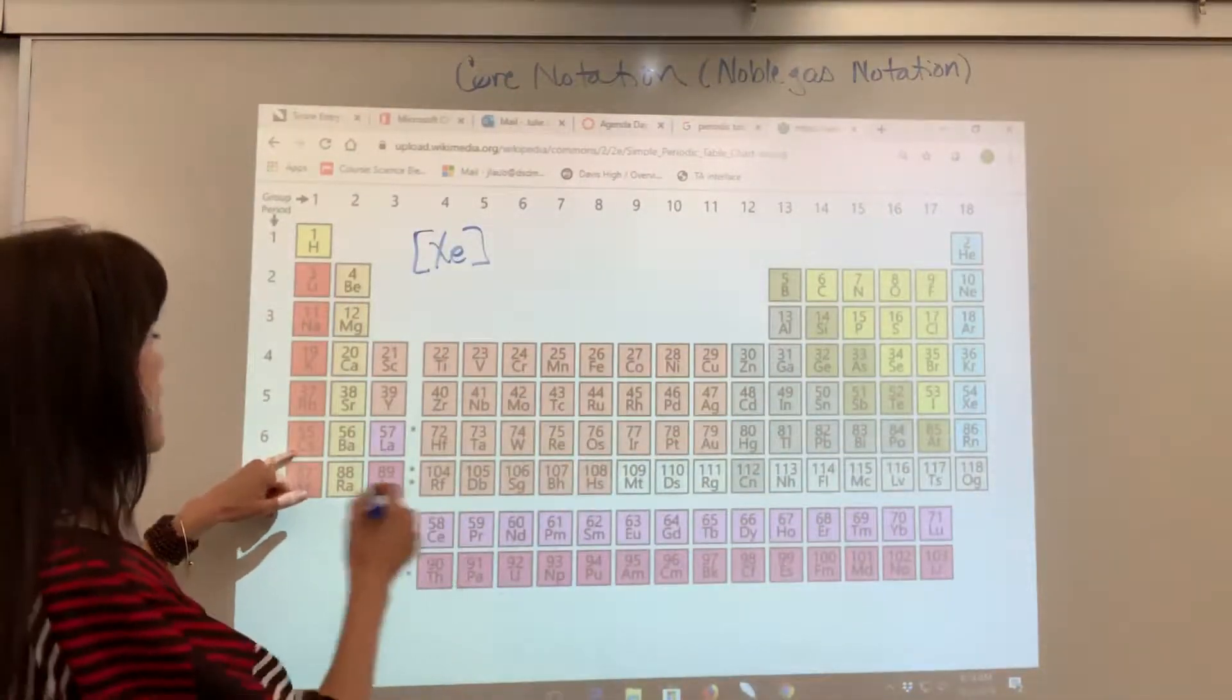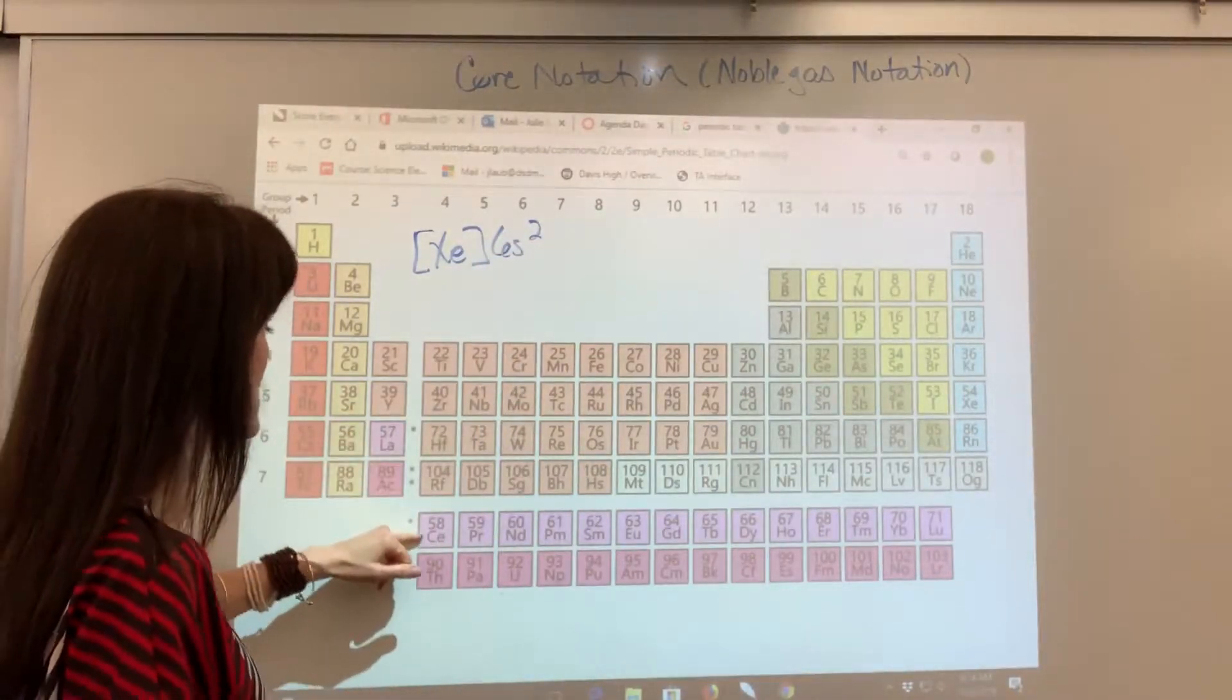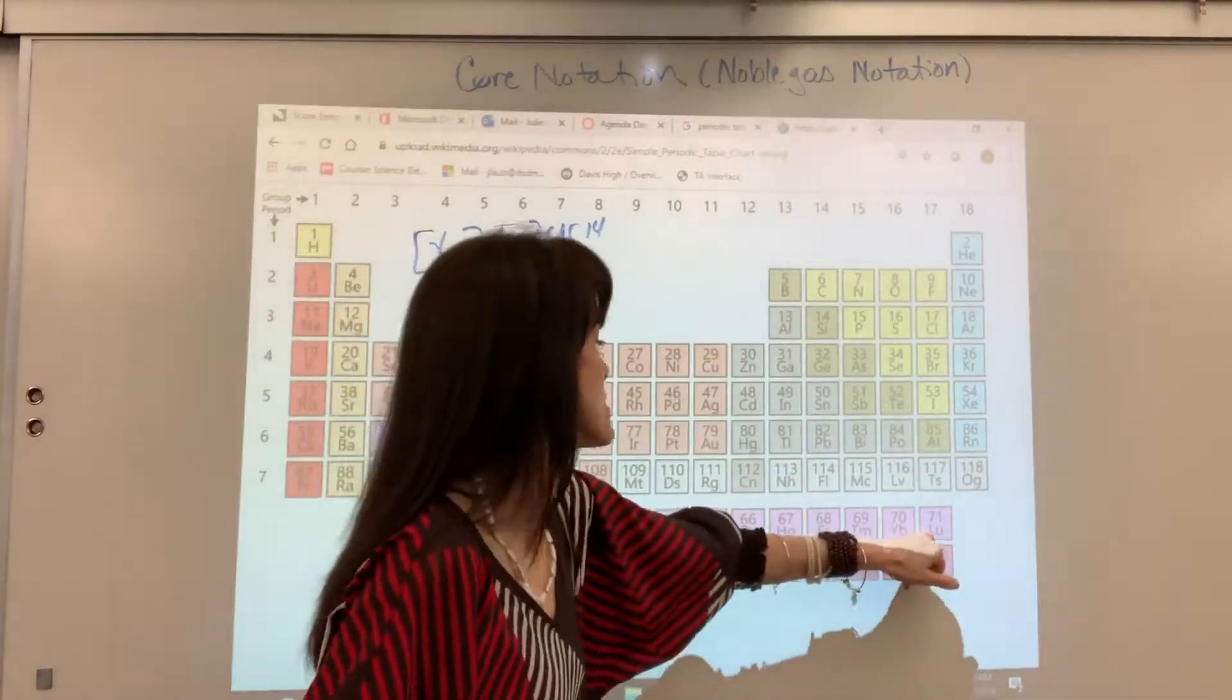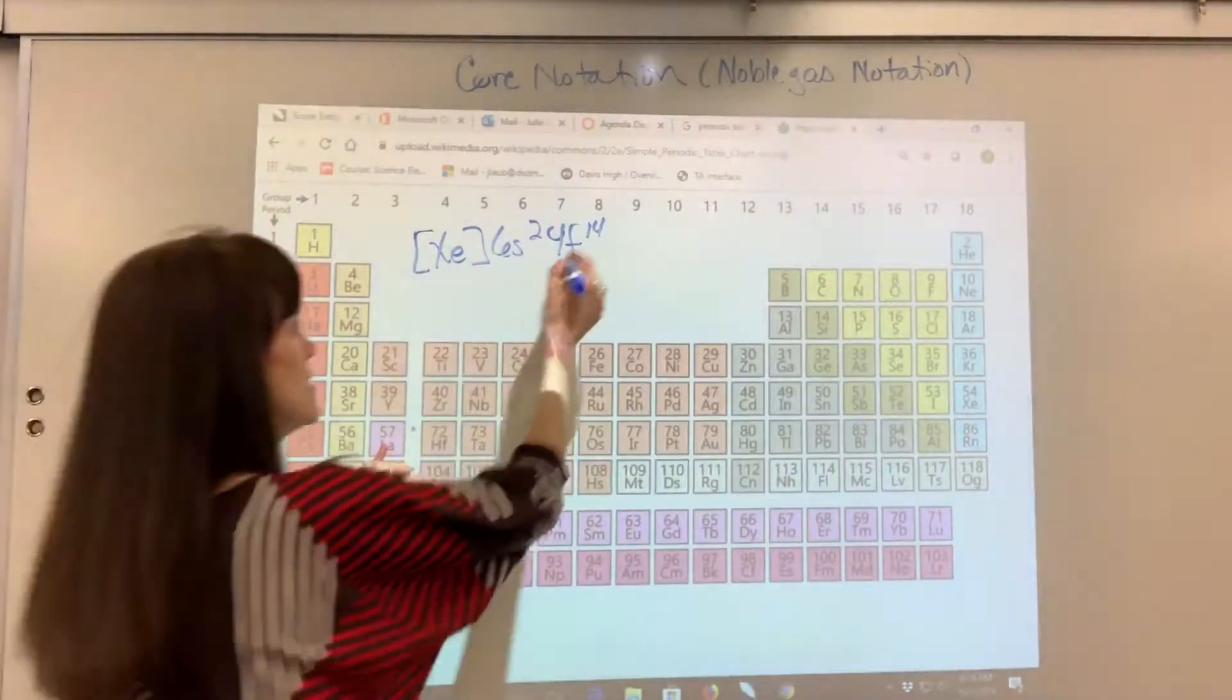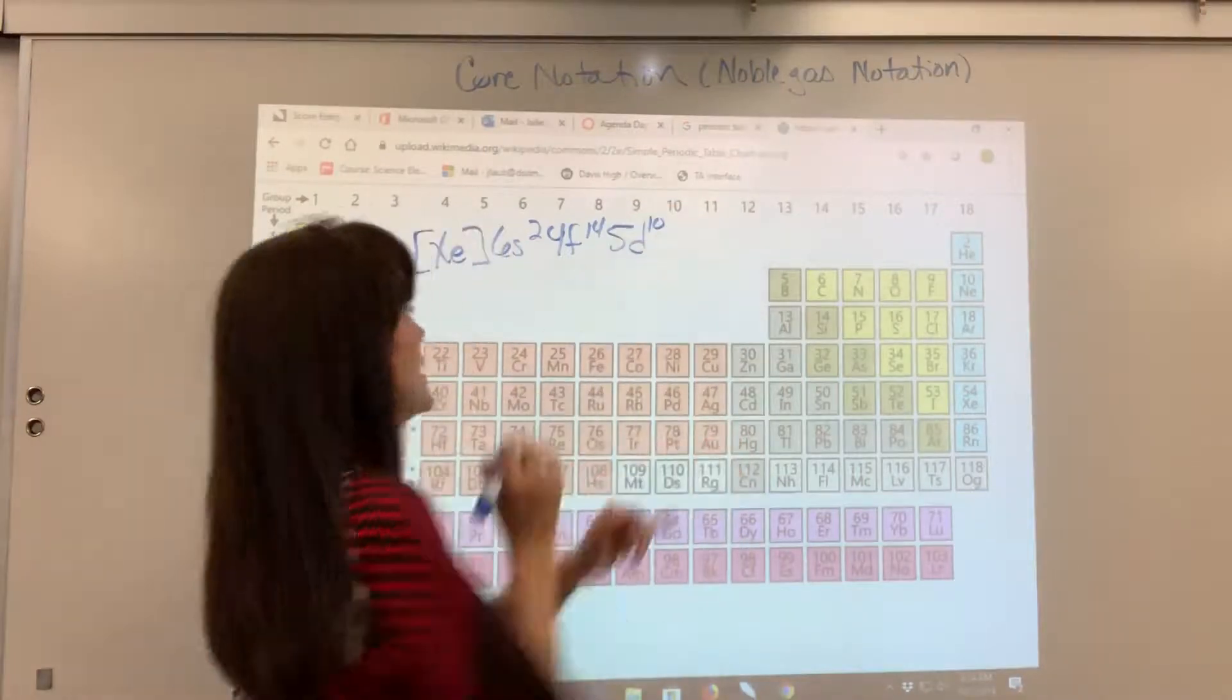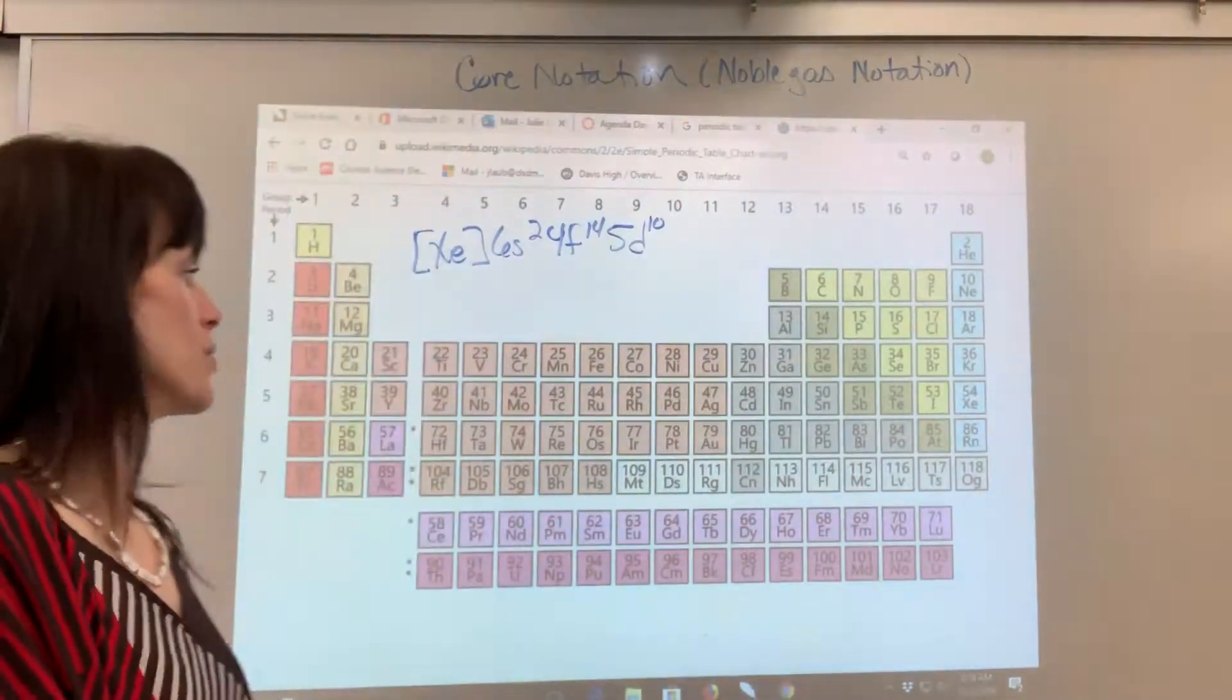We come here and we're at cesium, which is 6s2, 56, 57. We're going to come down. There's 4f14. It brings us to the 71. Come back. And we've got 3d, 4d, 5d, 5d. And we want to go to mercury, which is the 10. So, there's the core notation, noble gas notation for mercury.